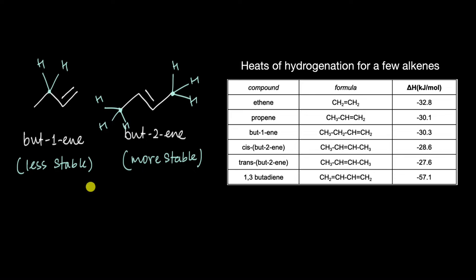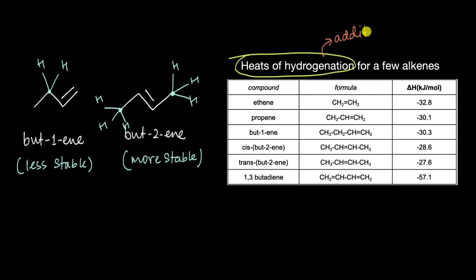One of the ways we can actually test this experimentally is by checking the heat of hydrogenation of but-1-ene and but-2-ene. What does heat of hydrogenation mean? Hydrogenation simply refers to the addition of hydrogen, and it turns out that whenever we add gaseous hydrogen to an alkene, some amount of heat is always released. If you look at the amount of heat released — the heat of hydrogenation — you'll see these values are somewhat different.